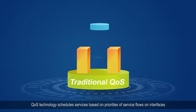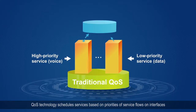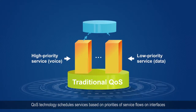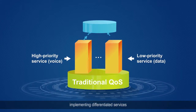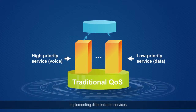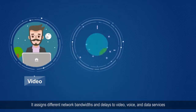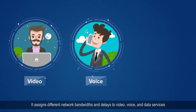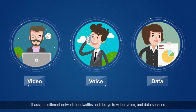QoS technology schedules services based on priorities of service flows on interfaces, implementing differentiated services. It assigns different network bandwidths and delays to video, voice, and data services.